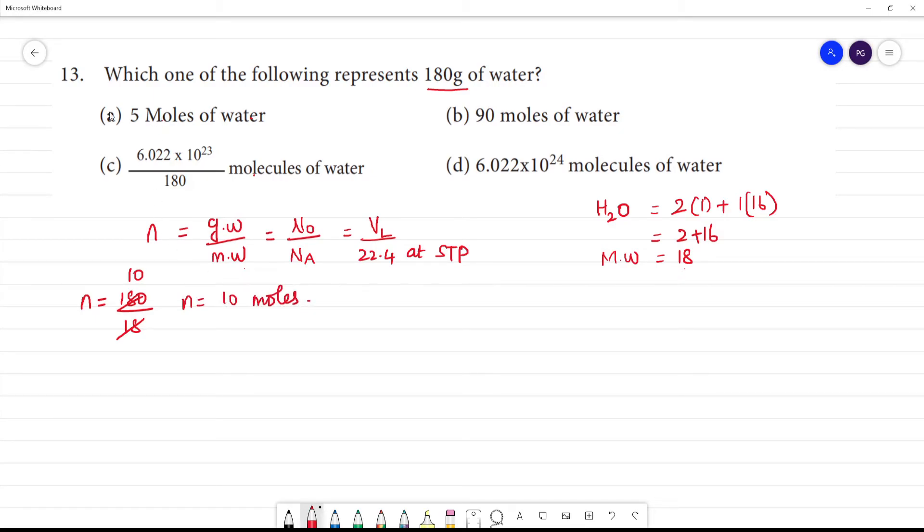So if we check 5 moles or 90 moles from the options, we calculated 10 moles. Now, we need to use both formulas and relate them.